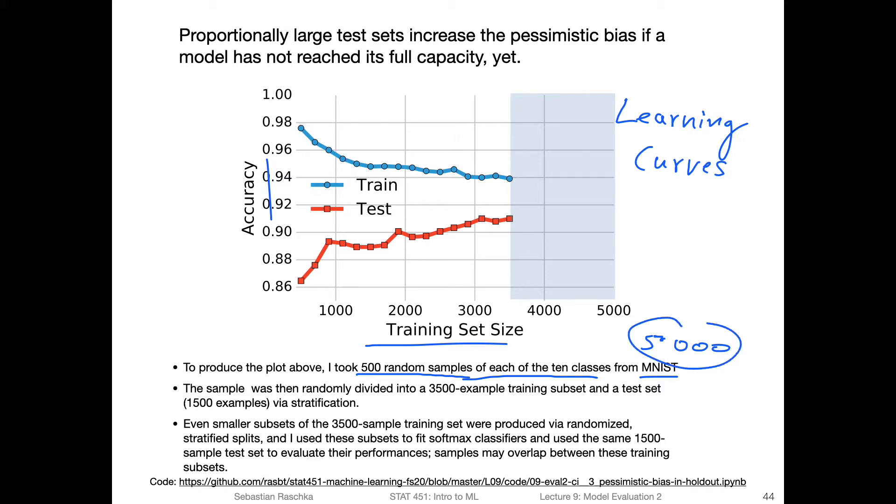But this is only on 5000 images subset, 500 random samples for each of the 10 classes, just to speed up the computation. What I did is I divided the 5000 into 3500 and 1500 for testing. So my test set is 1500. And then I have a second data set consisting of 3500, and from these 3500 I was constructing training sets of different sizes. So I was just drawing a random sample from the 3500. For example, here a random sample of size around 500, and so forth.